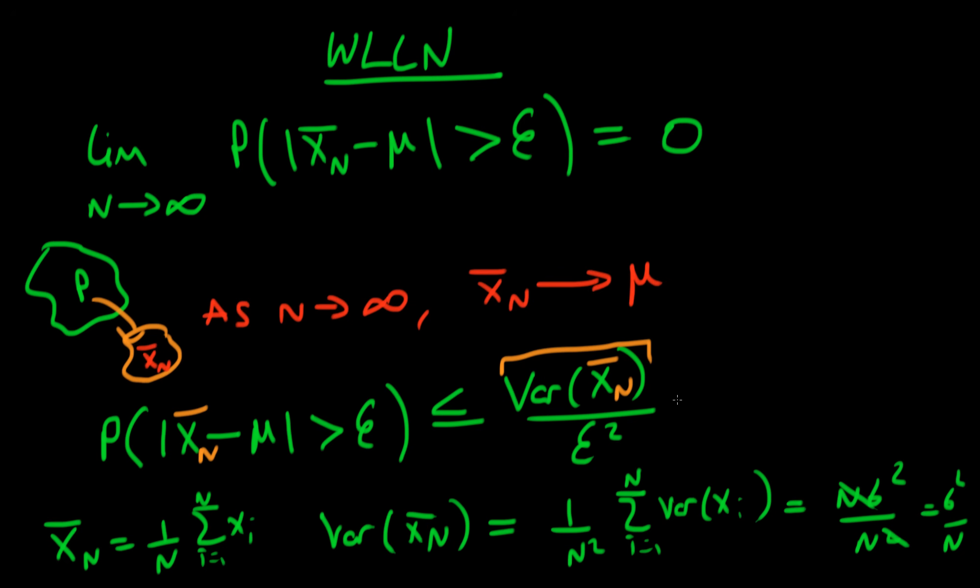So I can just write this right-hand side as σ² divided by n times ε², which we know as n tends to infinity, so as this denominator tends to infinity, we know that this term as a whole is going to tend to zero.